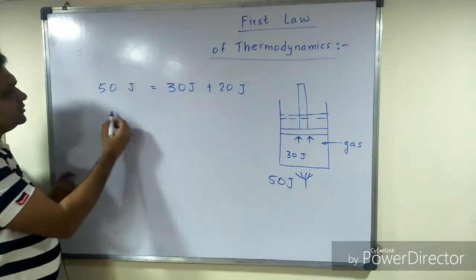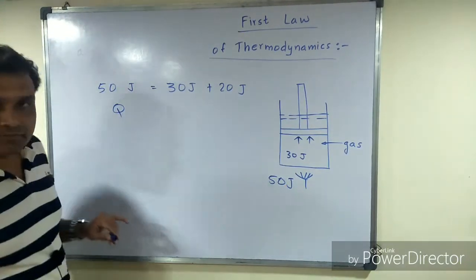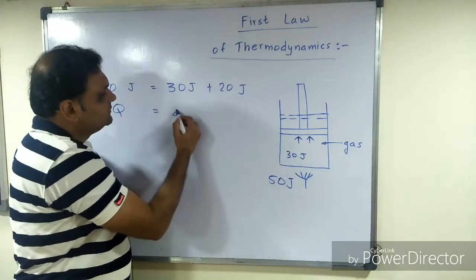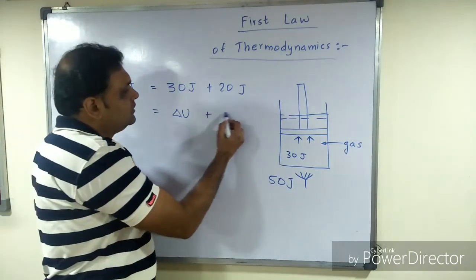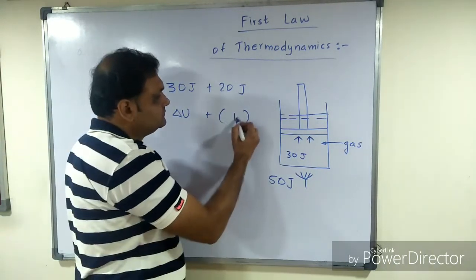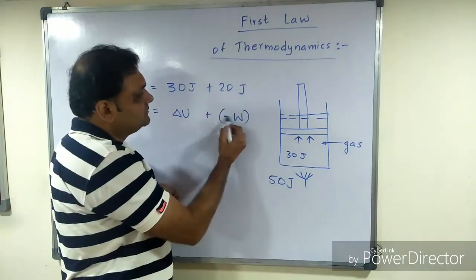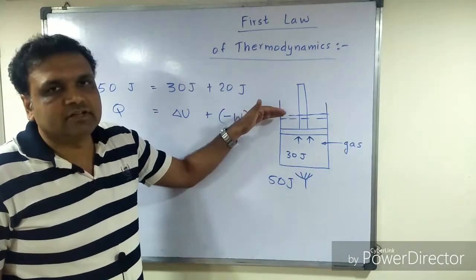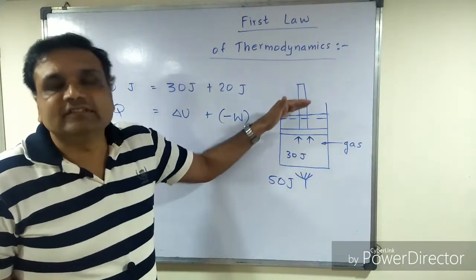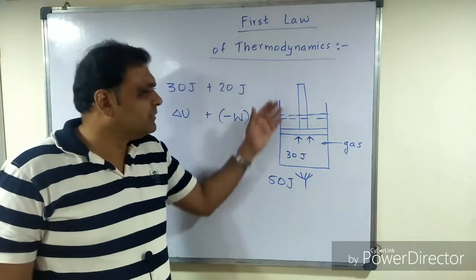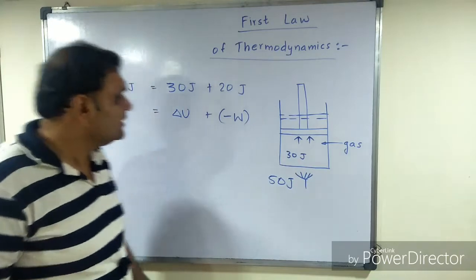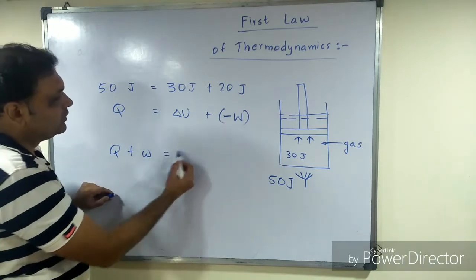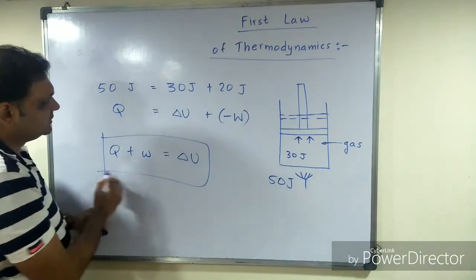It is negative by sign convention. According to IUPAC, whenever expansion occurs, that is treated as negative work. If gas is compressed, it is treated as positive work because then the internal energy increases. So I could write this as W. Therefore, Q + W = ΔU. This is the mathematical expression of the first law of thermodynamics.